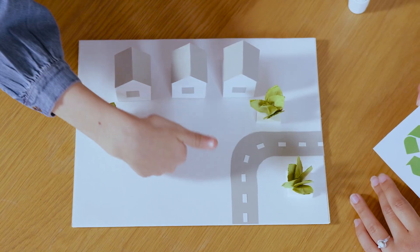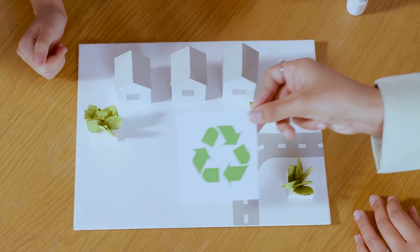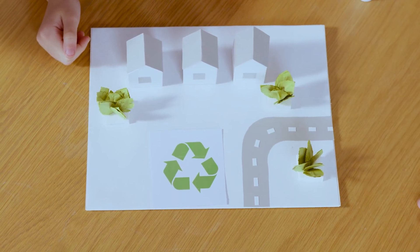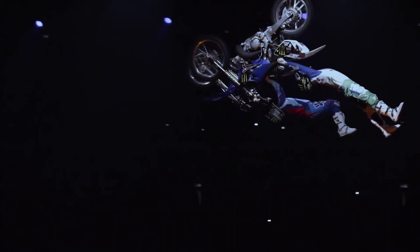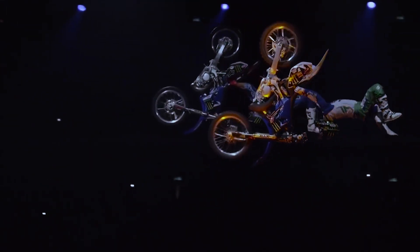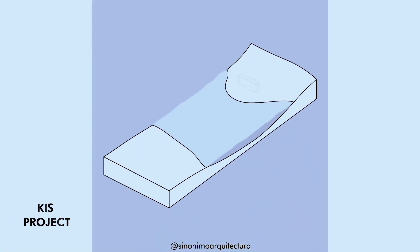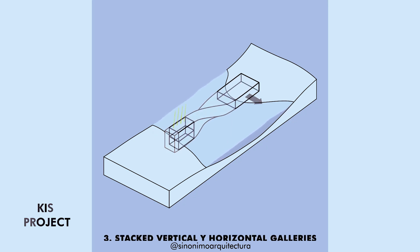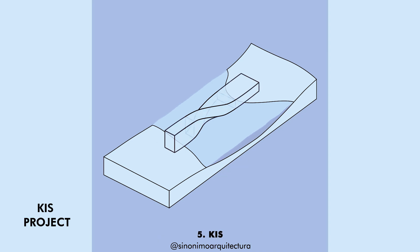Architectural design concept is meant in architectural presentations to show the working processes of how you achieved your design solution. So you don't just jump from analysis, case studies straight into your site plan and design solution. If you make such a presentation, which the majority of students in architecture try to do these days, you miss a very crucial part of your design process — which is how did you arrive at the design solution?